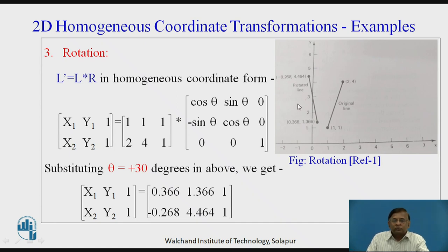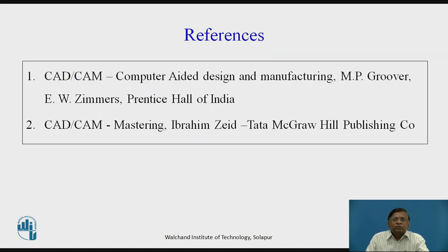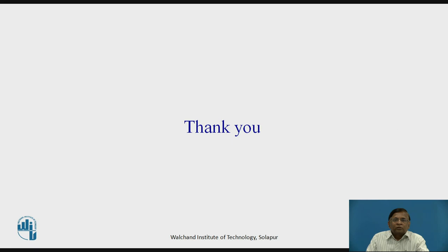So these are the transformations using 2D homogeneous coordinate systems. These are the two books we have referred to: Grover and Ibrahim Zaid. We have taken all these things from these two books. Thank you.